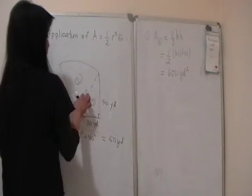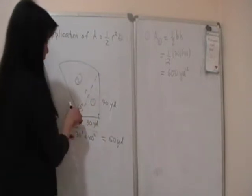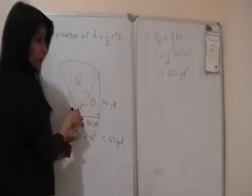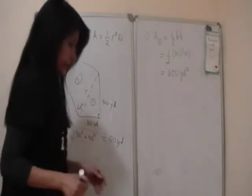So r here is 50 yards, and I have the central angle, 60 degrees, which I can convert to radians.